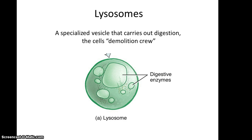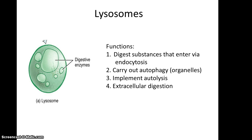Lysosomes are specialized vesicles involved in carrying out digestion of food-like particles and invading microbes — think of them as the cell's demolition crew. Their functions include digesting substances that enter via endocytosis, including phagocytosis. Lysosomes are also involved in autophagy, which is the breakdown of organelles that have become non-functional or are too numerous. They also implement autolysis — destroying the cell itself when a defect such as infection occurs — and can carry out extracellular digestion by fusing with the plasma membrane and releasing digestive enzymes.